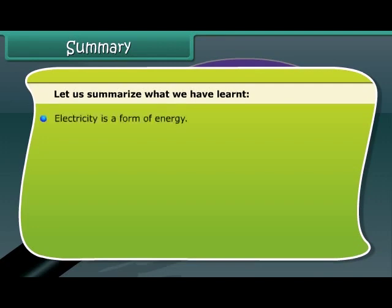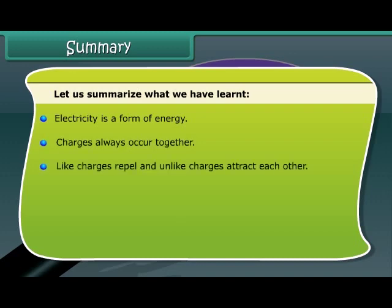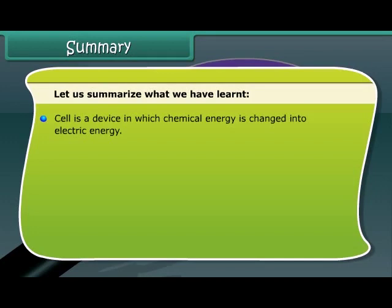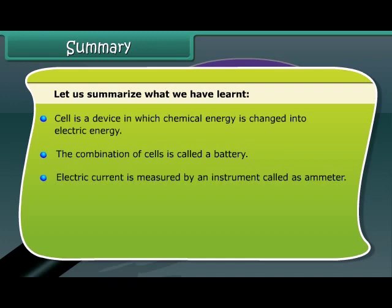Let us summarize what we have learned. Electricity is a form of energy. Charges always occur together. Like charges repel and unlike charges attract each other. The flow of electrons is called electric current. Lightning is an electric discharge in the sky. Cells are sources of electric current. A cell is a device in which chemical energy is changed into electric energy. The combination of cells is called a battery. Electric current is measured by an instrument called an ammeter. Metals and inorganic salts are good conductors. Non-metals and organic compounds are insulators.